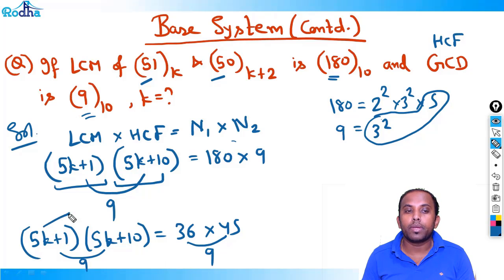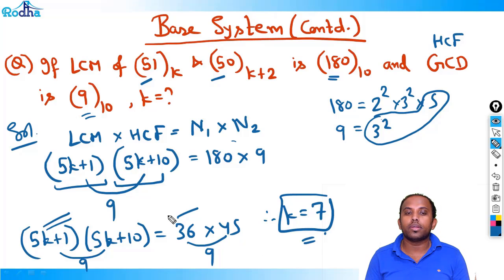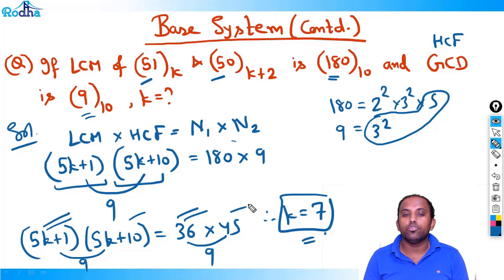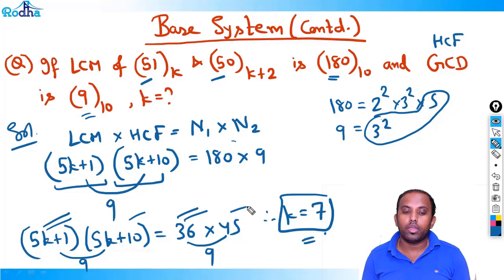That means 5K+1 = 36, therefore K = 7. So K = 7 is the answer. You can equate either: 5K+1 = 36 or 5K+10 = 45. Both give K = 7.